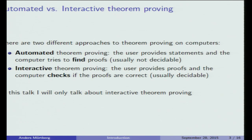I want to emphasize two different fields in computer proving. One is automated theorem proving, where the user provides statements and the computer tries to find a proof. That's usually not decidable — you can write a program that enumerates all theorems of a theory, and if the statement is a theorem the program will terminate, maybe after a million years. But if the statement is not a theorem, the program will not terminate. So this problem is semi-decidable.